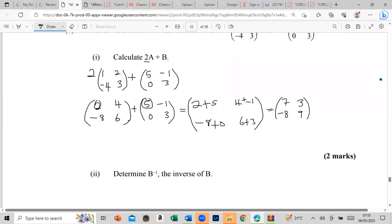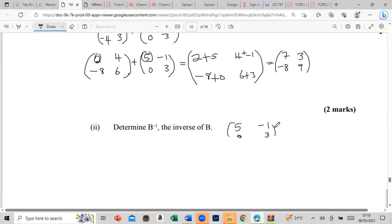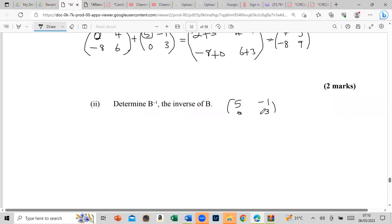Alright. It said determine the inverse of B. So let us find the inverse of B. So B is 5, negative 1, 0, and 3. Let's go. So to find the inverse, we need to find the determinant. So it's 5 times 3 minus negative 1 times 0. Well, it's going to equal to 0, so we don't even need to write this. So this is going to equal to 15 plus 0 which is 15. So what it is, we put 1 over the determinant which is 15.